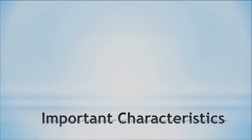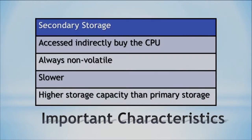So what makes secondary storage interesting? First of all, it's indirectly accessed by the CPU, meaning that the CPU cannot go directly and read from the secondary storage — it needs to have something in the middle. It's non-volatile, meaning that it stays there, or at least that's what they want us to think. It's slower to access, and it is slower because it's indirectly accessed by the CPU, not directly.